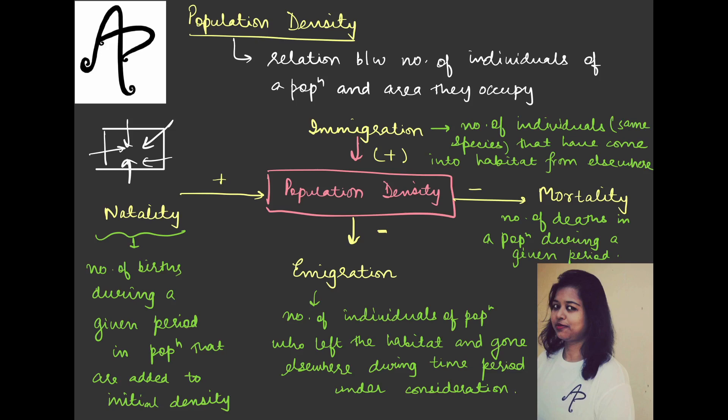So in the next video, I will talk about the attributes of the population and the differences between, major differences rather, between the term population and organism. And then we will also have a section on the population interactions. For example, you would have come across the terms like Mutualism, Parasitism, Commensalism, Competition etc. So what do we understand by those terms? We will take in the next video. Once I finish all the topics related to population, only then I will move to the next level of organizations which is community, and then further on ecosystem, biome and biosphere. I hope you guys are being helped by these particular sessions. If you are, please do like, comment, share and subscribe and help me spread the word. Thank you so much. Take care. Bye bye.